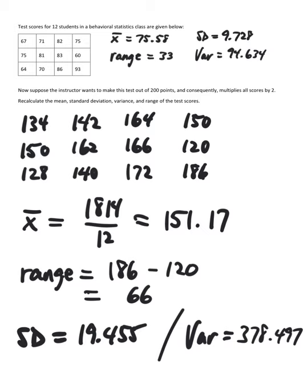I just sketched in the descriptive stats from the original scores as a reminder. They're written to the right of the chart of numbers, test scores. So the original mean was 75.58. If you were to double that, you get the new mean, 151.17.